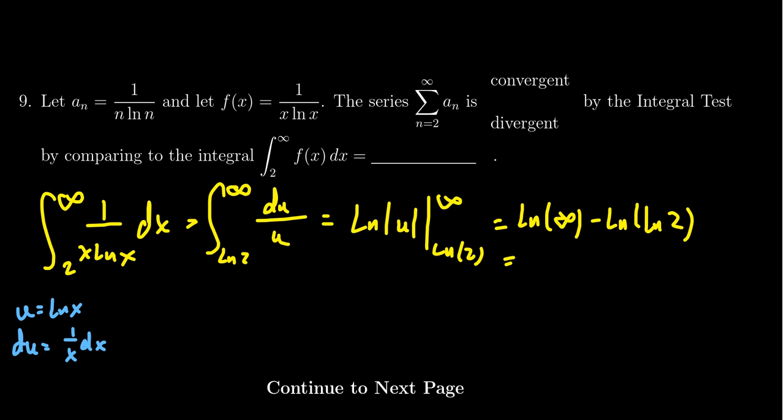So this thing is going to become infinity minus a number, but that number is peanuts compared to infinity. This thing is going to be infinite. So we just calculated that the integral is actually infinite. And by the integral test, the convergence of this integral is the same as the convergence of the series. The improper integral is divergent because it became infinity, so the series is likewise divergent by the integral test.